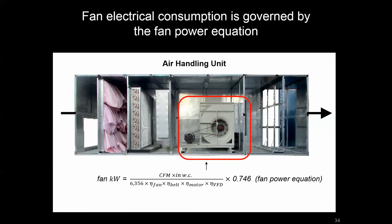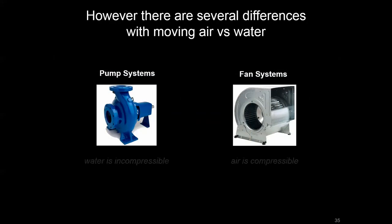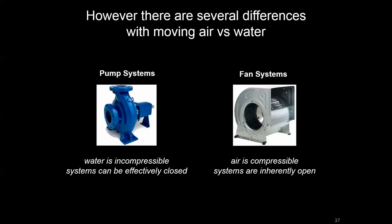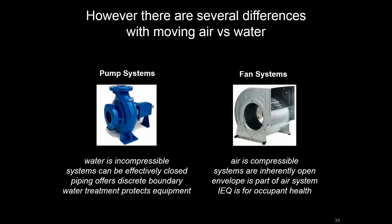On the airside, the fan has a similar electrical load story to the pump, and we'll cover the fan equation in the next video. But it's worth pausing on the key differences between these systems. Water on the pumping side is incompressible, whereas air being a vapor is compressible, which changes the dynamics of how air moves through a fan system. With pumping systems, we essentially have a closed loop with no direct interaction with the atmosphere. Fan systems are inherently open — while you have the piping infrastructure as a discrete boundary, the building envelope will always have some leakage, exfiltration, or infiltration, so the building envelope must be considered part of the air system.